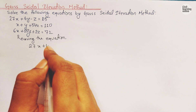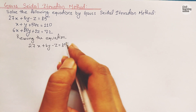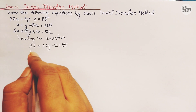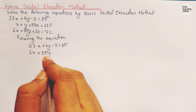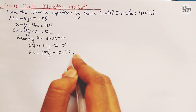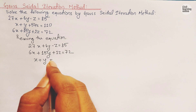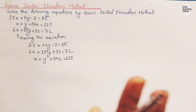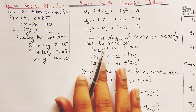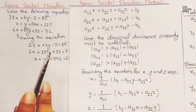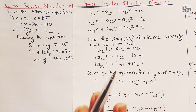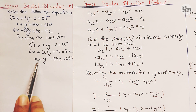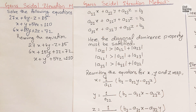After rewriting the equations, we have: 27x + 6y - z = 85, then 6x + 15y + 2z = 72, and x + y + 54z = 110. Now checking diagonal dominance: 27 > 6 + 1 = 7, 15 > 6 + 2 = 8, and 54 > 1 + 1 = 2. All three diagonal elements are higher than the sum of the other coefficients in their respective rows.